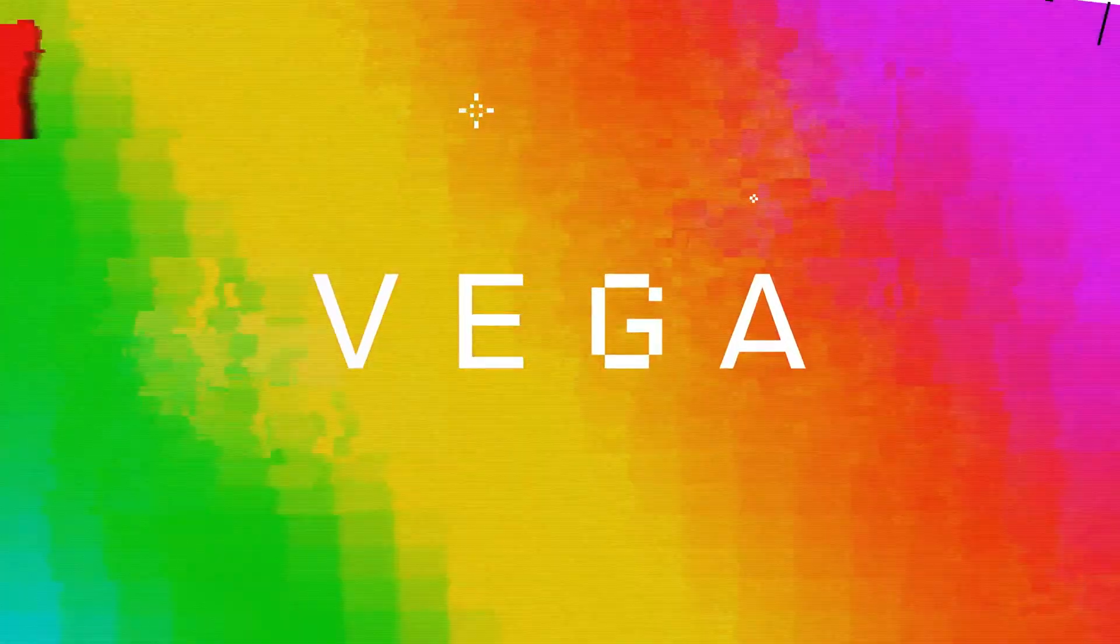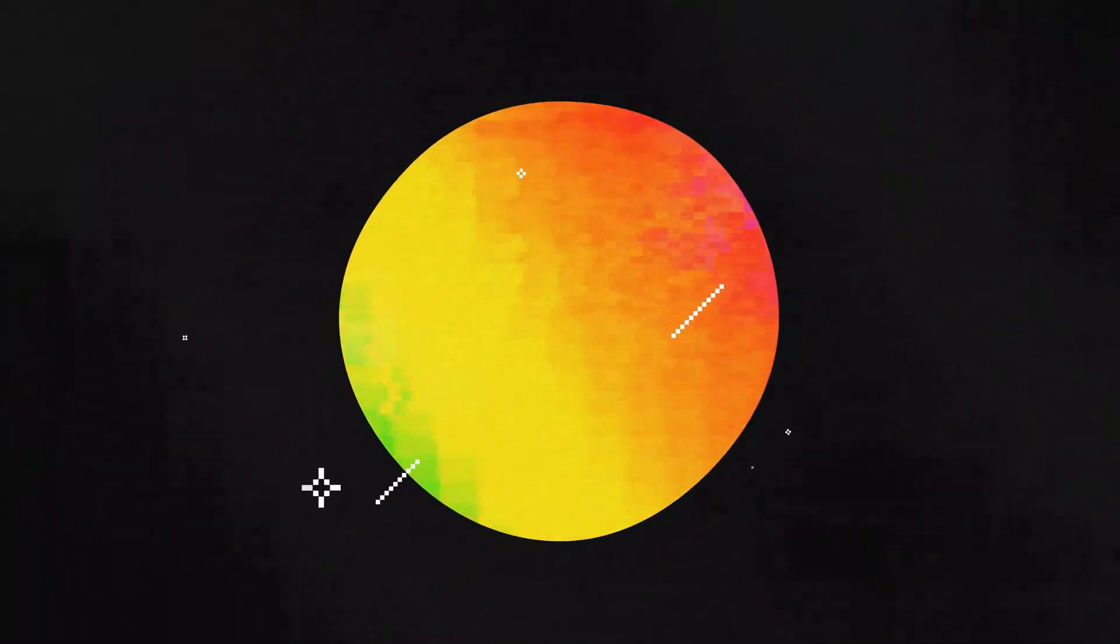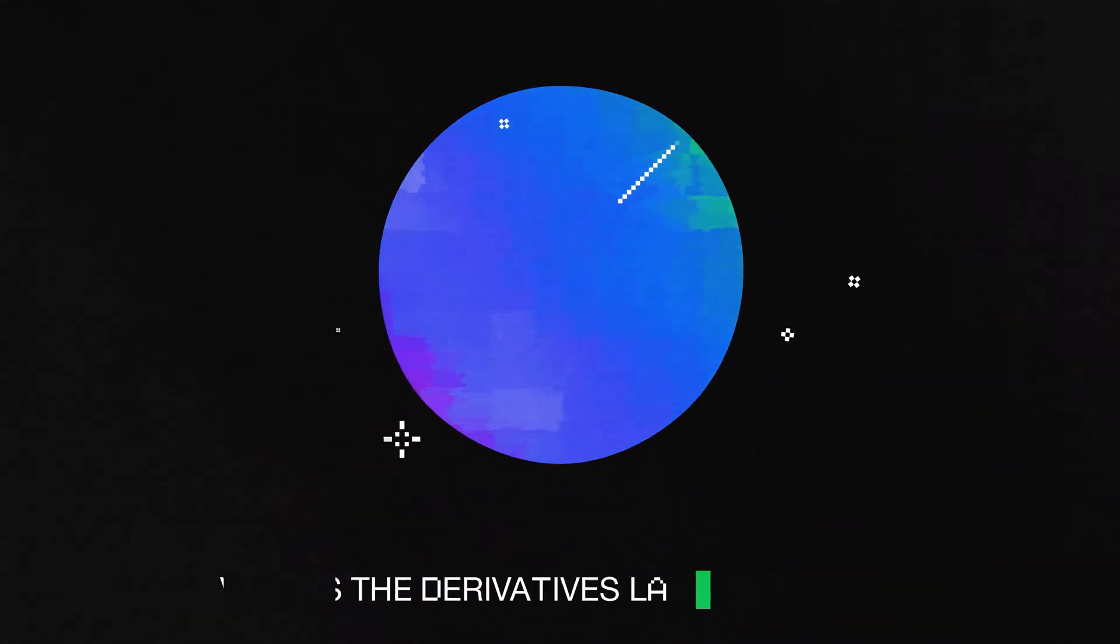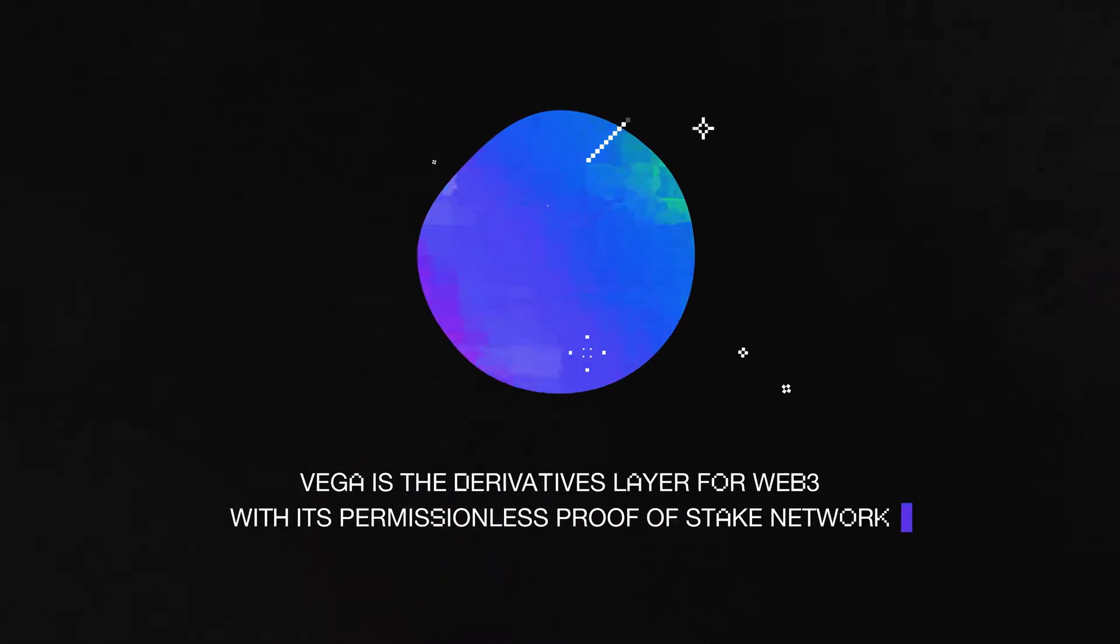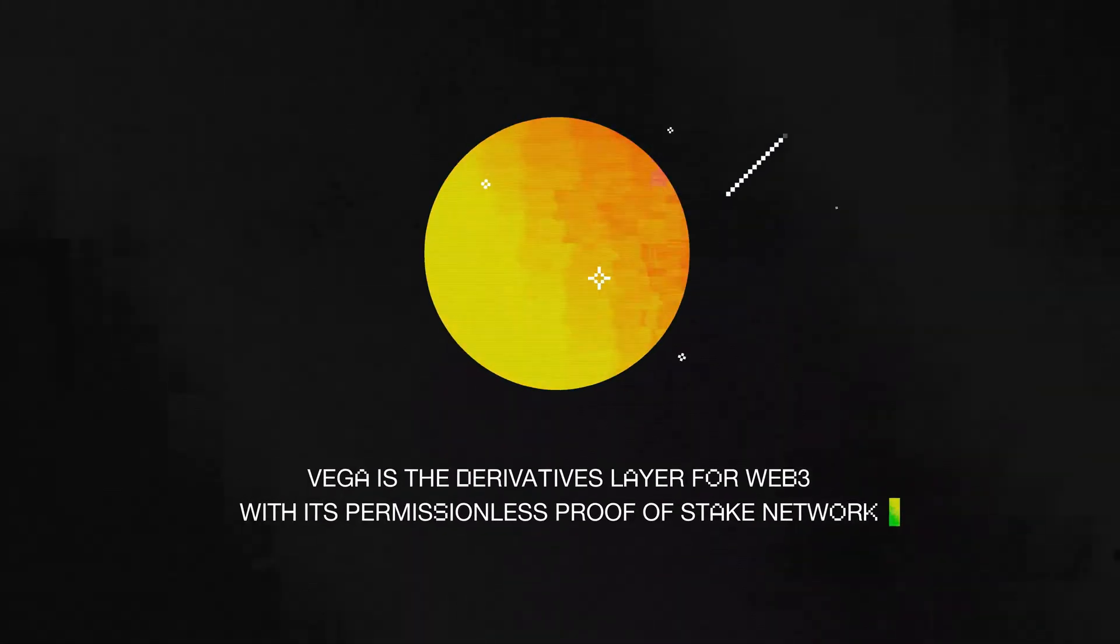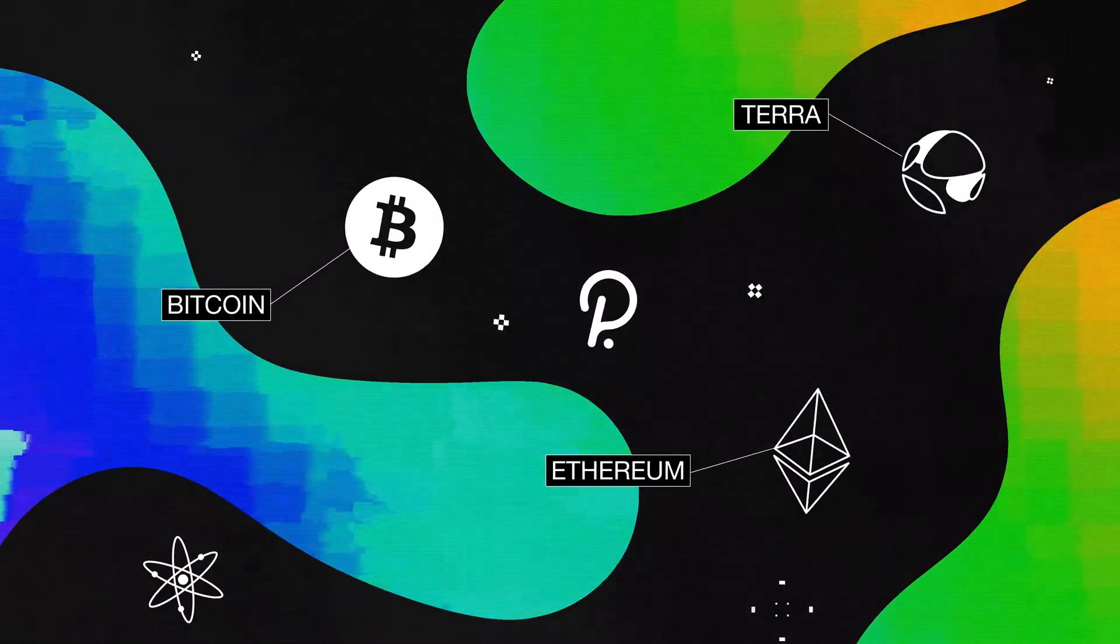That's where Vega jumps in. It's not just changing the game, it's creating a whole new one. Vega is the derivatives layer for Web3, rewriting the rules with its permissionless proof-of-stake network and bringing efficient trading to the entire ecosystem for the very first time.